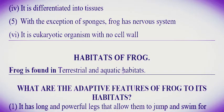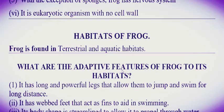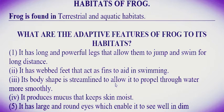Habitats of the frog: the frog is found in both terrestrial and aquatic habitats. Adaptive features of the frog to live in these habitats — number one: it has long and powerful legs that allow it to jump and swim for long distances. Number two: it has webbed feet that act as fins to aid in swimming. Number three: its body shape is streamlined to allow it to propel through water more smoothly.